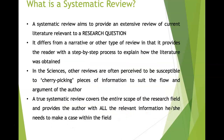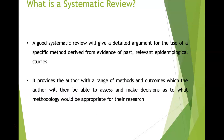A systematic review aims to provide an extensive overview of current literature relevant to a research question, much like an empirical study would. It differs from other types of reviews in that it provides a very precise step-by-step process to explain how the literature was obtained. A true systematic review covers the entire scope of the research field and provides the author with all the relevant information needed to make a case within the field.